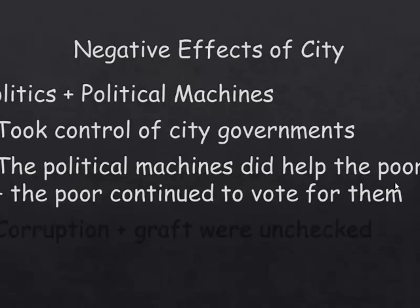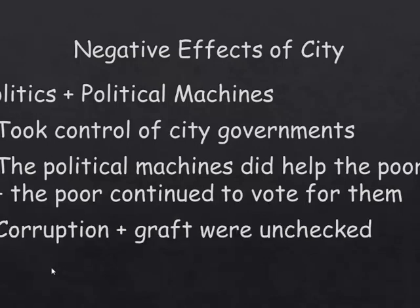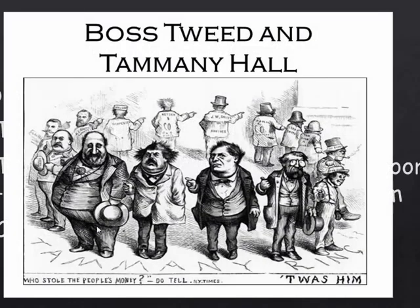These poor, uneducated people said, 'Hey, that guy's a good guy — I'm going to vote for him again.' So the poor continued to vote for them. But behind the scenes, these politicians were doing a ton of corruption. The word for this is graft. These mayors used their jobs to line their own pockets, basically stealing public money. No one really knew about it at first because everything was chaotic. But the mayor looked good, so he must be doing a good job, right?